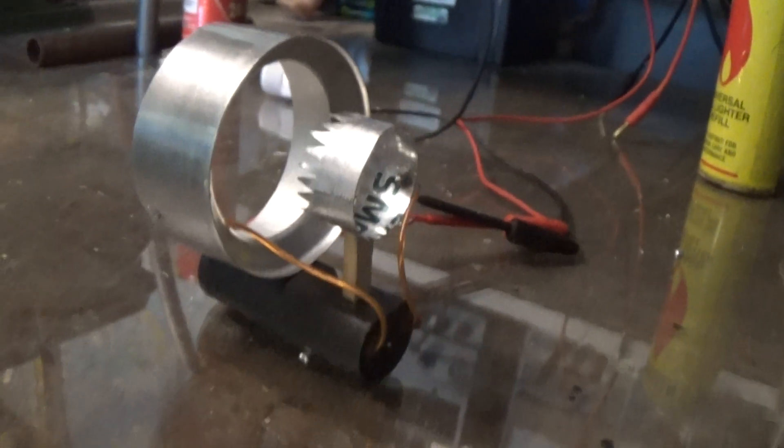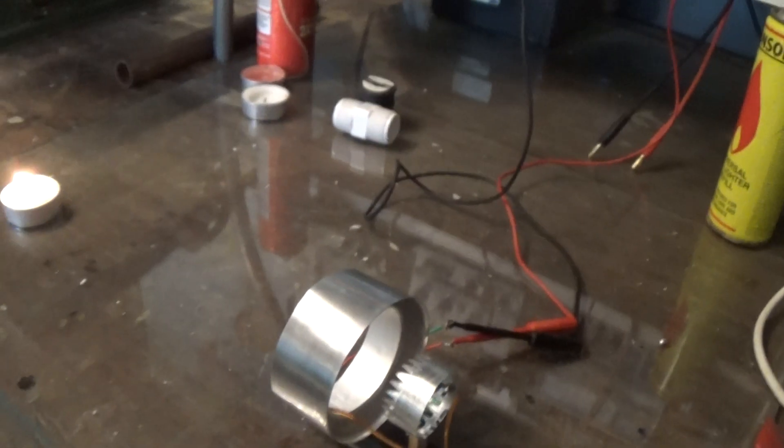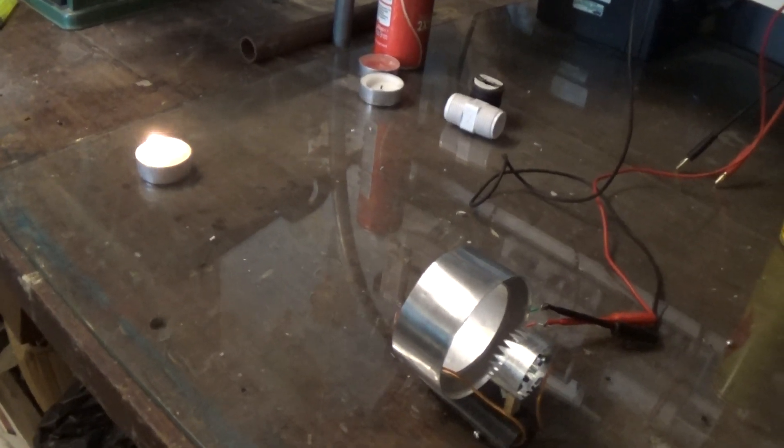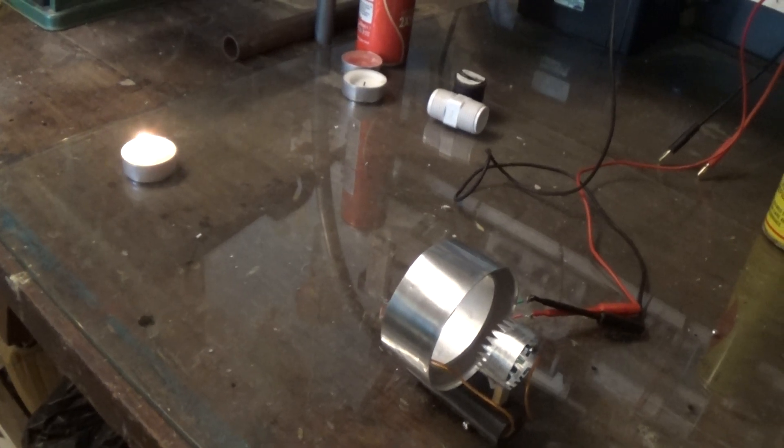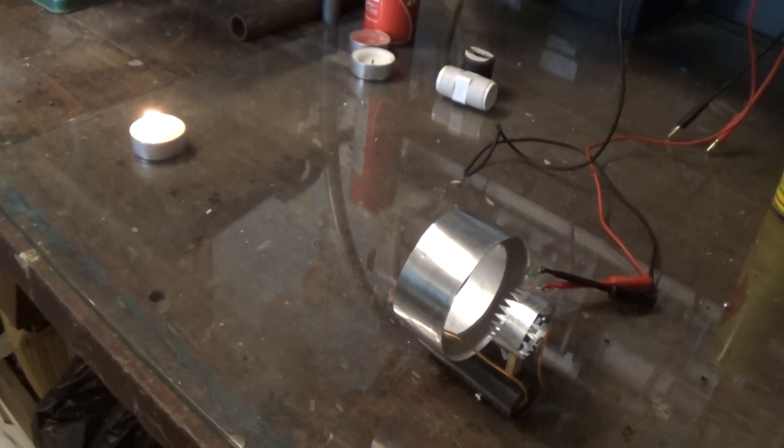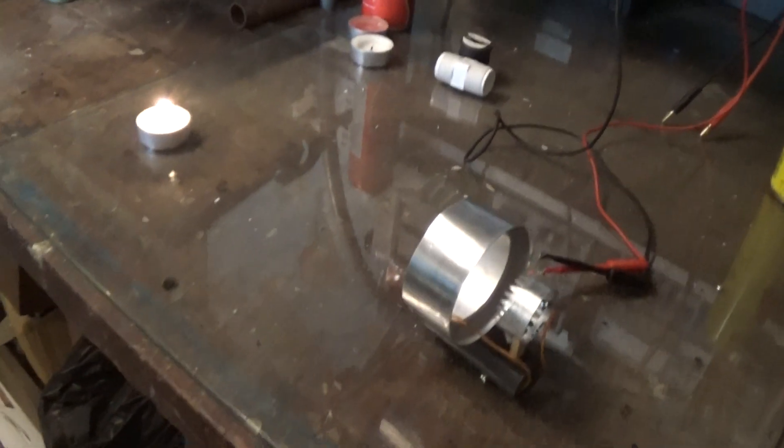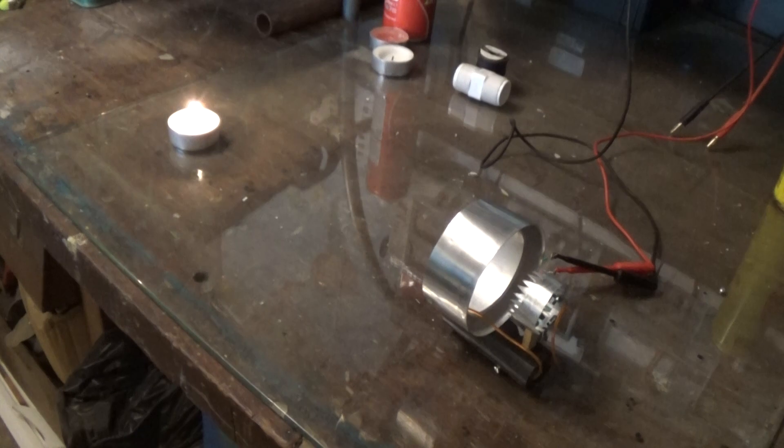So your tea light. It looks nice this one, I'm quite pleased with the aesthetics. Let's just turn him on. You can see that candle doesn't like that at all, that's nearly blowing that out at 30 cm. And we'll turn it off again, and you can see the candle comes back to normal life.